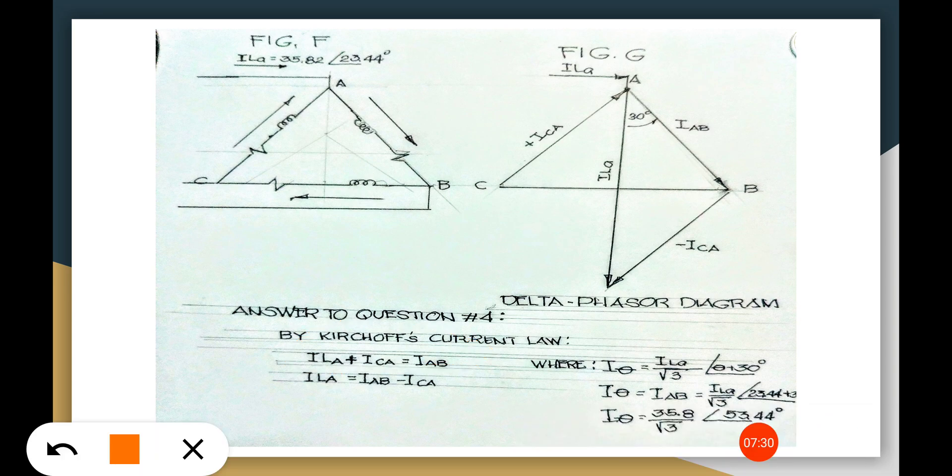This Iab is equal to ILa minus Ica. You have to take the opposite of the Ica, this one which is negative Ica. We have this Iab.